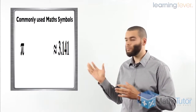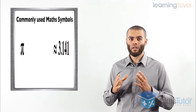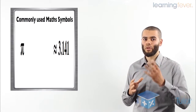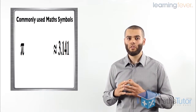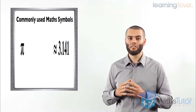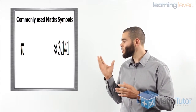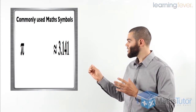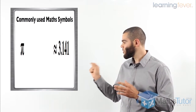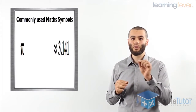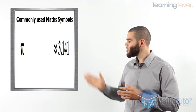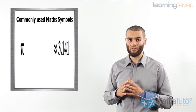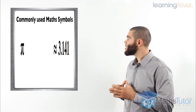The last symbol is PI. It is used when working with circles — whether calculating the circumference of a circle, the area of a circle, spheres, or cylinders. PI is approximately equal to 3.141, and it is a continuous number. When you press PI on your calculator, you always get 3.141 and the number continues. In fraction form, it is approximately 22 over 7.